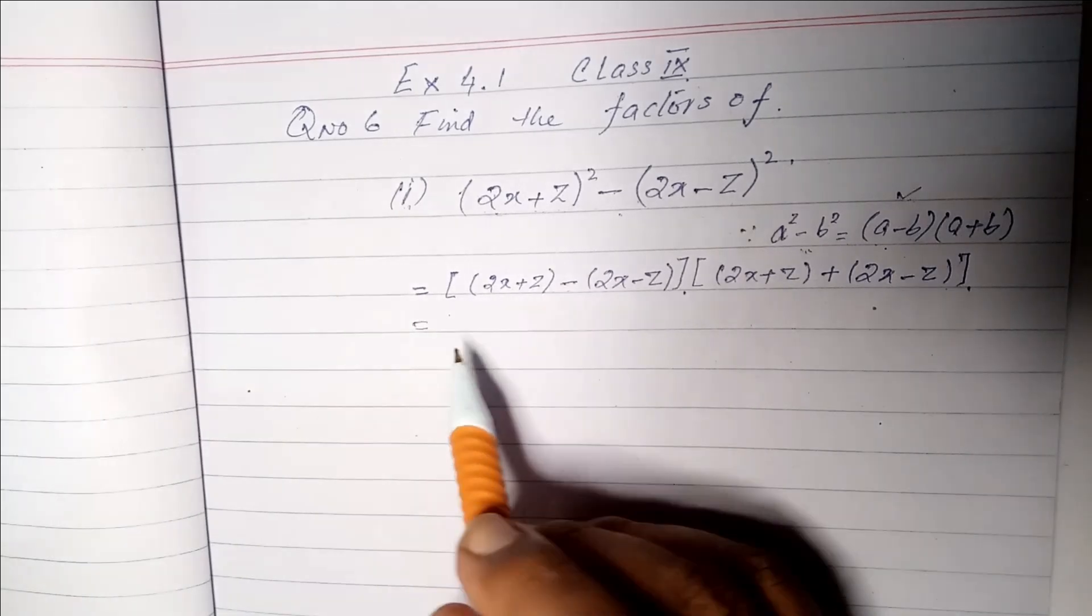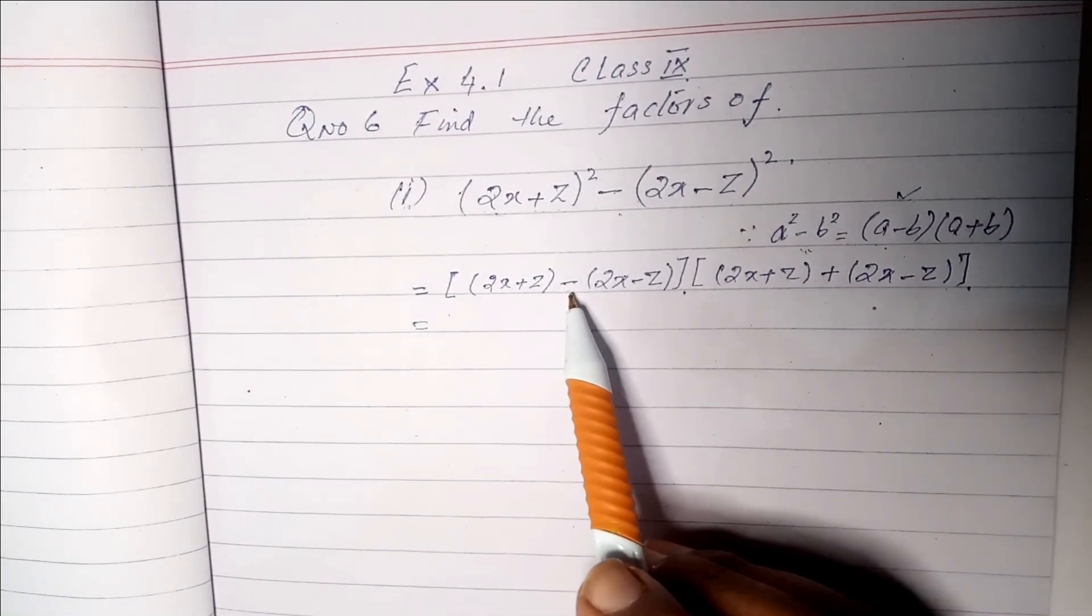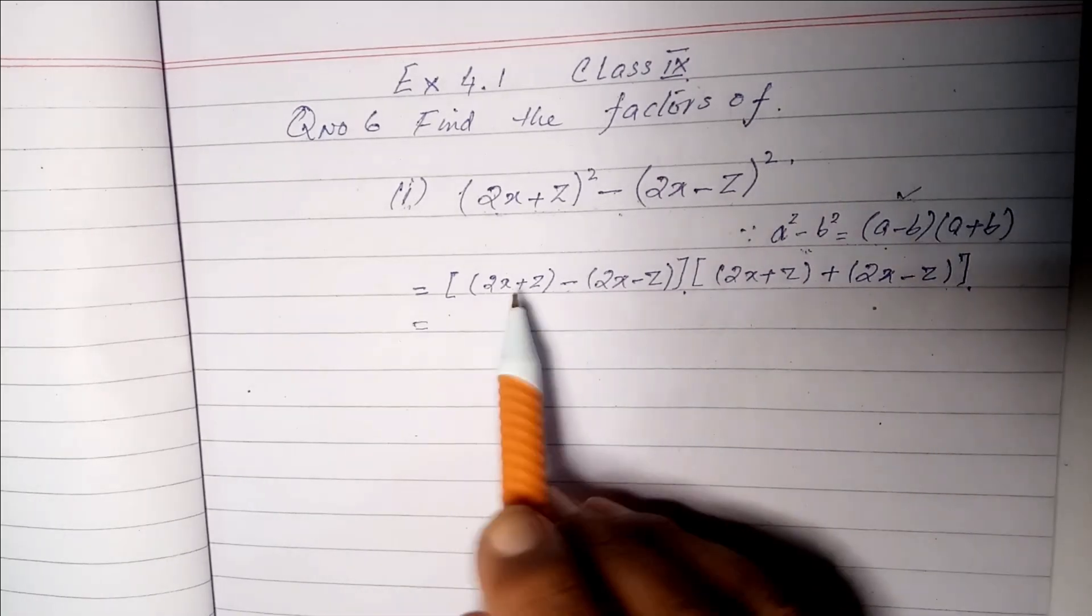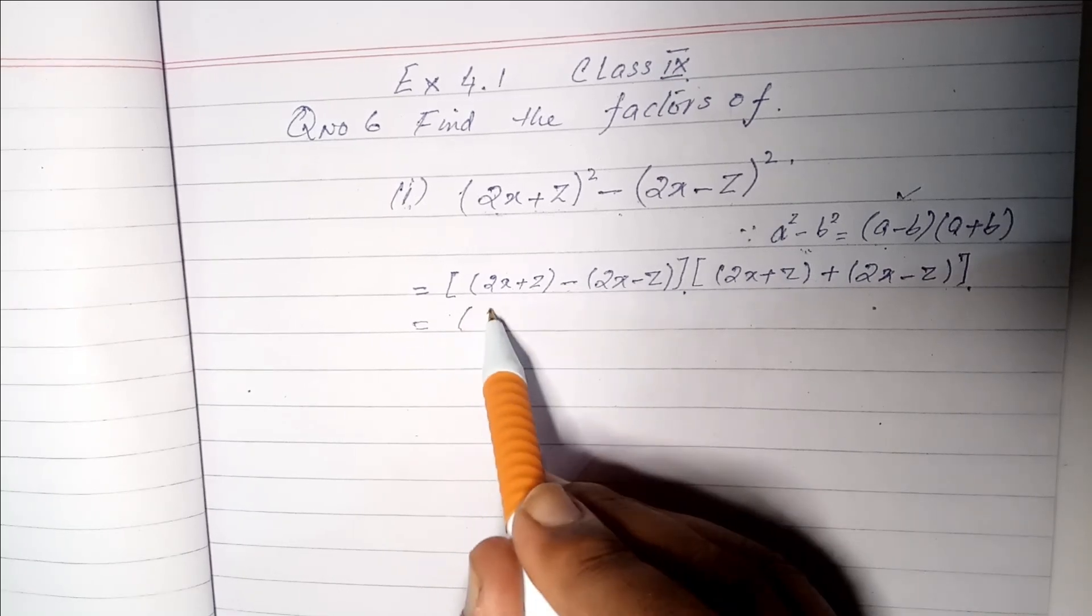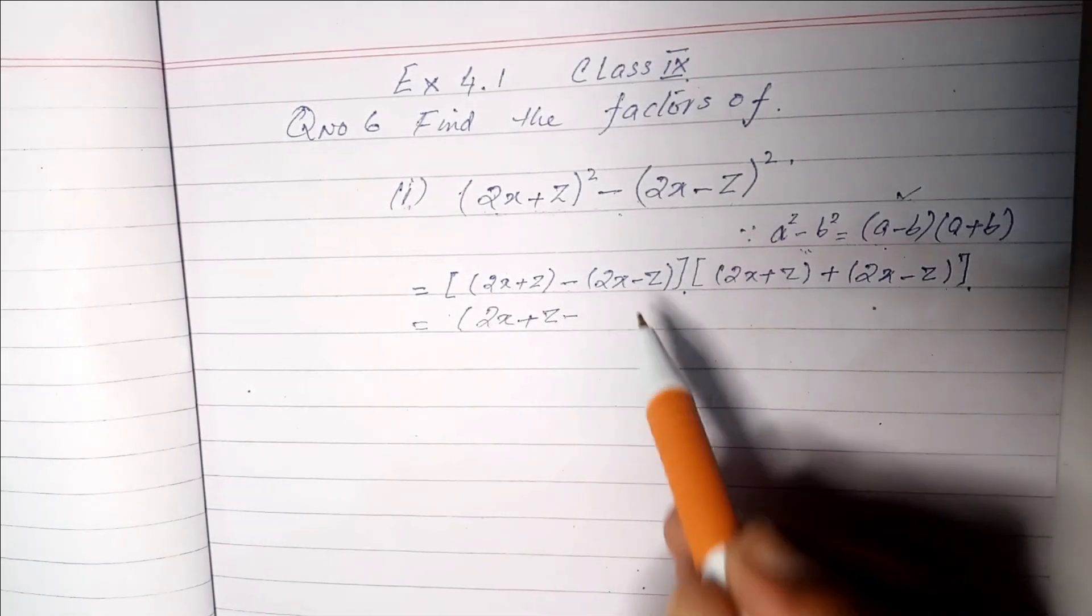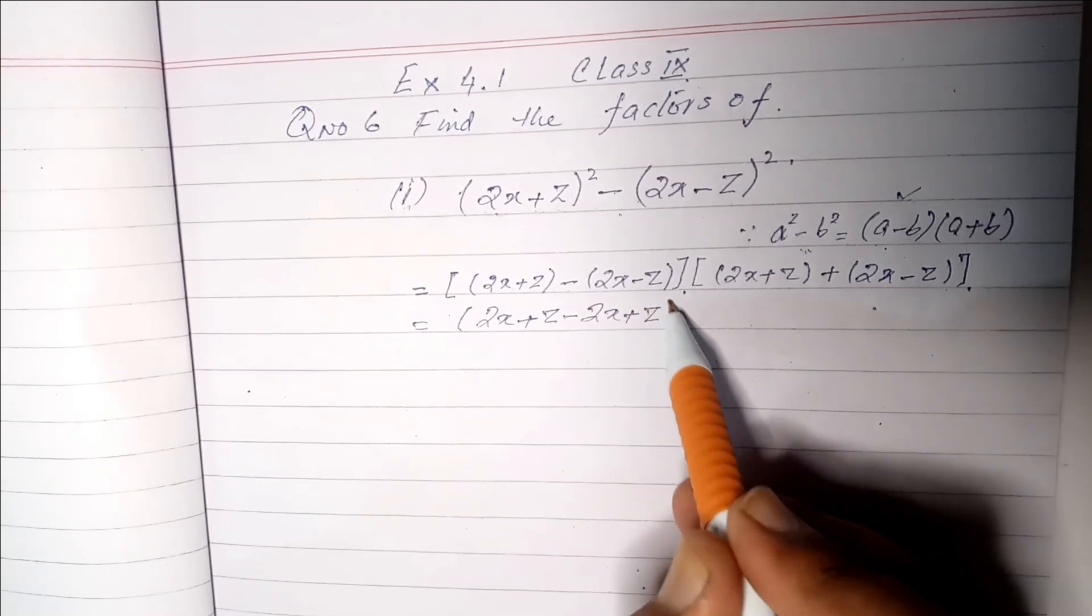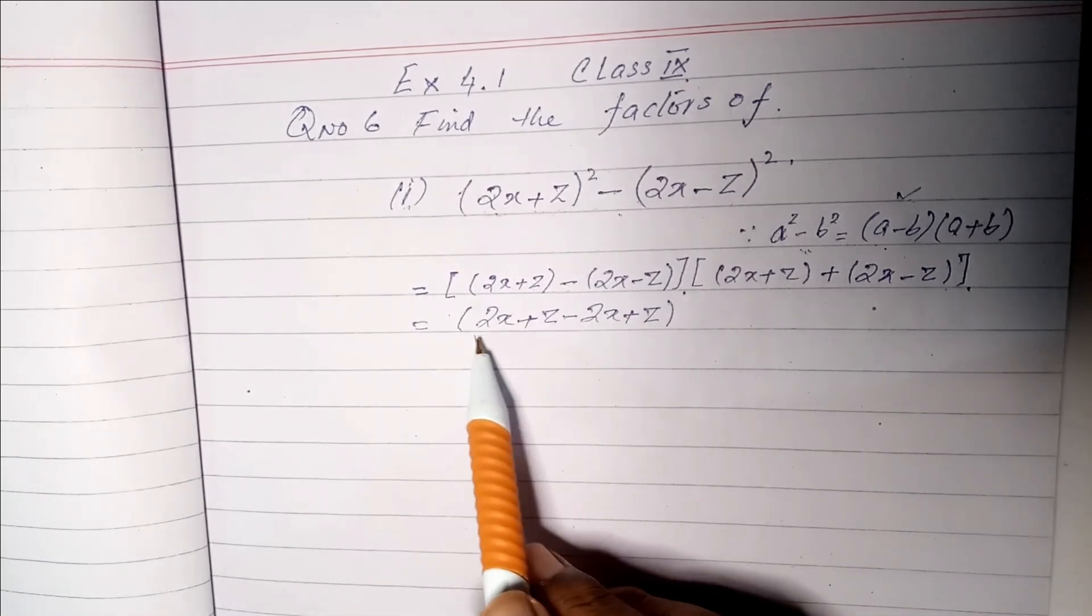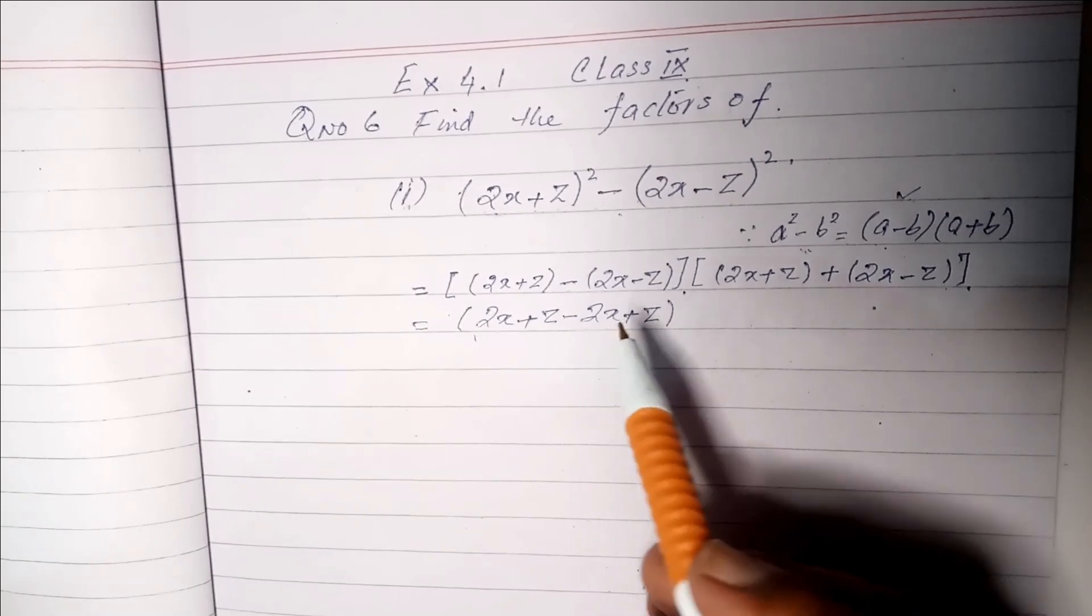Now what will we do? We will open these brackets. We have to think that before the brackets, the sign of minus will change the sign of the inside. So we will write 2x+z minus 2x plus z. If we see, we have this value in plus and this value in negative, so this is additive inverse and this value will cancel.